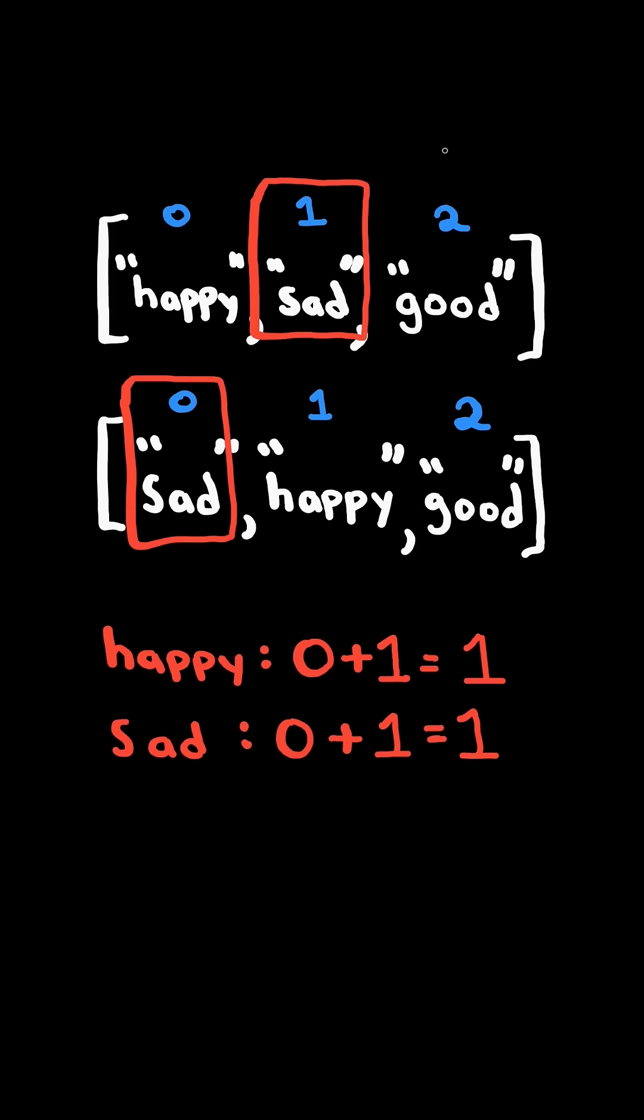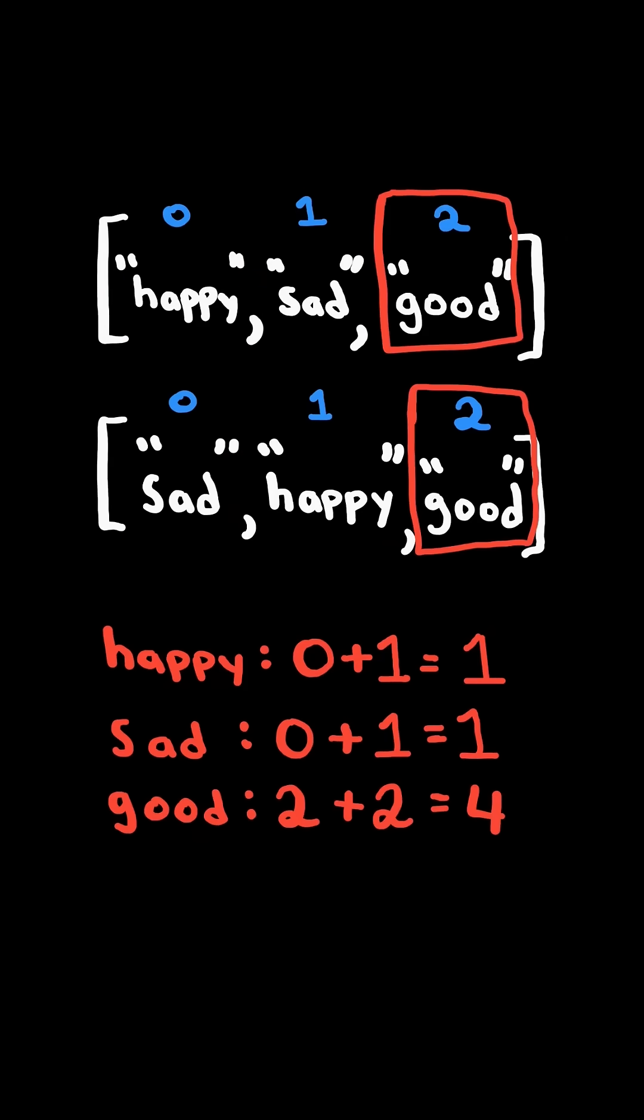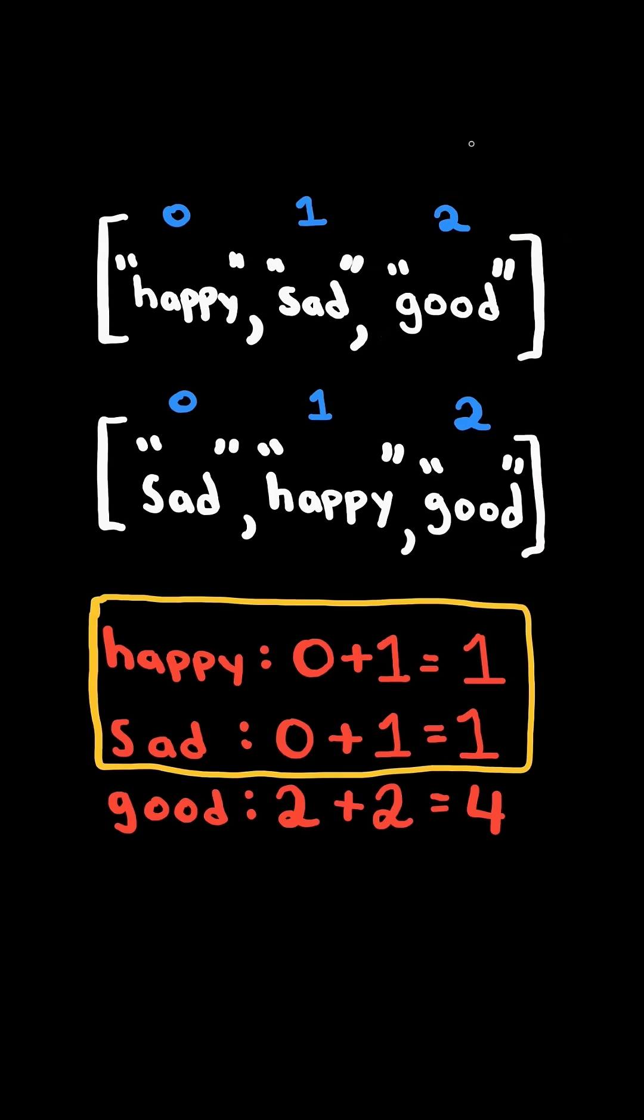The sum of the indices of sad is 1 and the sum of the indices of good is 4. Consider the common strings with the least sum and return a list with those strings.